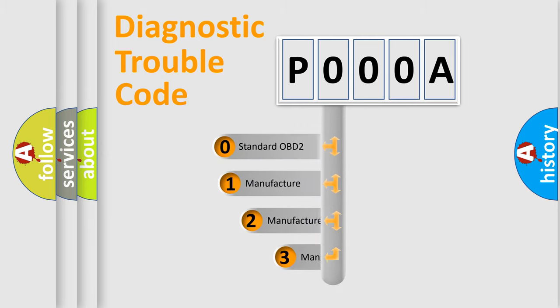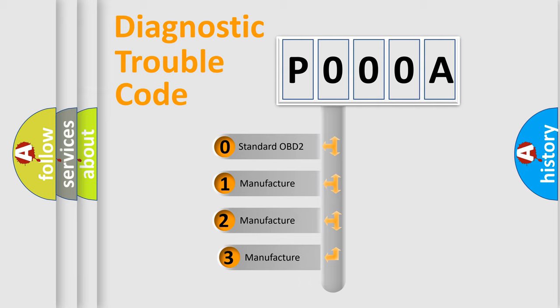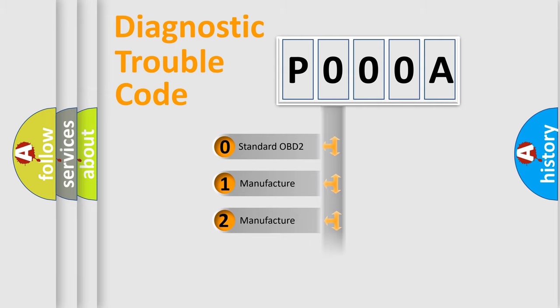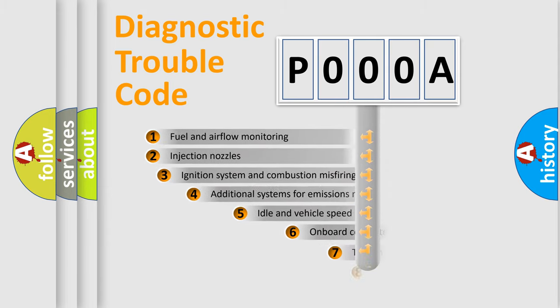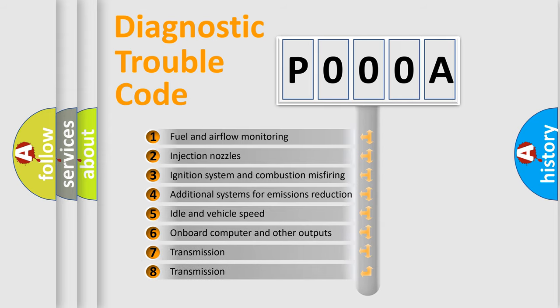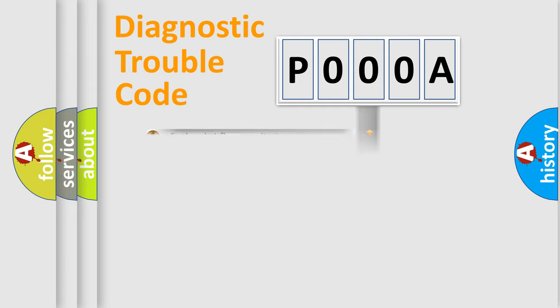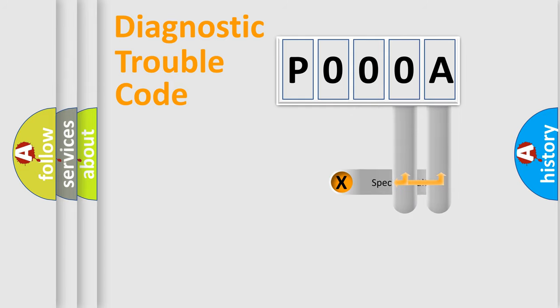If the second character is expressed as zero, it is a standardized error. In the case of numbers 1, 2, or 3, it is a more specific expression of a car-specific error. The third character specifies a subset of errors. The distribution shown is valid only for the standardized DTC code. Only the last two characters define the specific fault of the group.